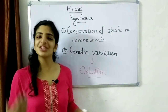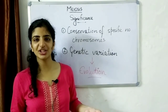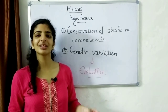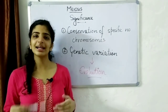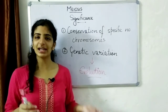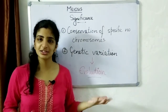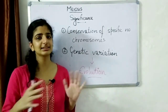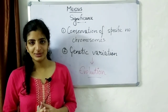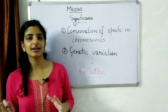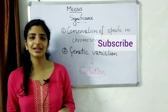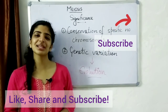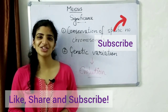I hope you understood what meiosis is. In future videos we are going to talk about cytokinesis, the differences between mitosis and meiosis in animals and plants, and the checkpoints that occur in the cell cycle and how they are regulated. If you liked this video, don't forget to press the like button and subscribe for future updates. Thanks for watching!